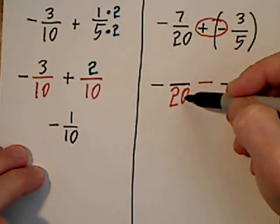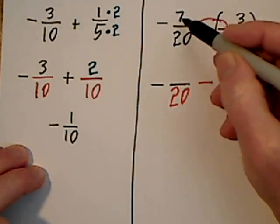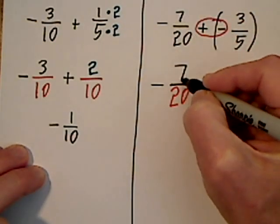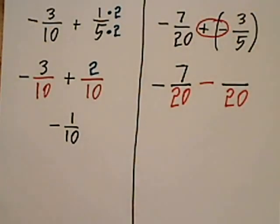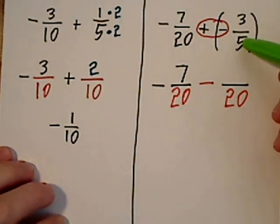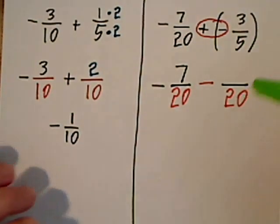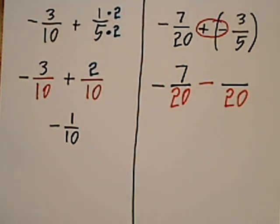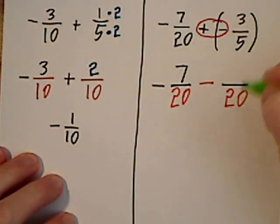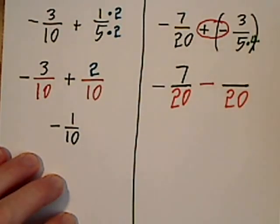This was already a 20, so I didn't change anything. I just keep the numerator as it was. Over here, we went from 5 to 20. And again, you have to do so in a way that's balanced. So to get from 5 to 20, you multiply by 4.